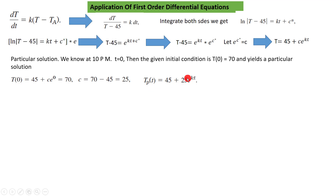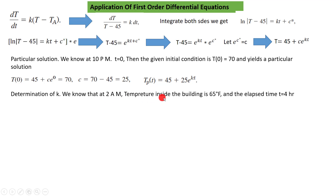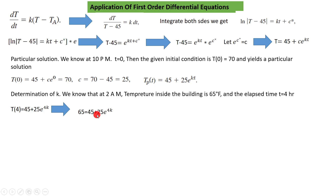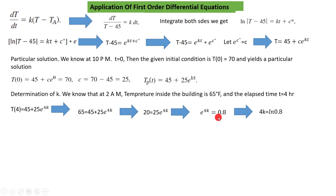For the second boundary condition, at 2 a.m. the temperature inside is 65°F. From 10 p.m. to 2 a.m. is 4 hours, so the elapsed time is 4. Substituting: 65 = 45 + 25e^(4K), so 20 = 25e^(4K), giving e^(4K) = 0.8. Taking the natural log, 4K = ln(0.8), so K = −0.056. We now have the particular solution.